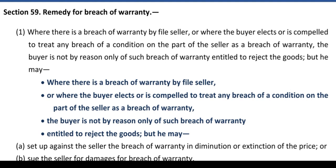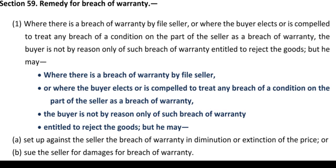Section 59 — remedy for breach of warranty. This right is available to the buyer. Note: specific performance under Section 58 is also an important exam topic — 5 mark questions can be asked in judiciary exams and LLB examinations. Section 59 provides: where there is a breach of warranty by the seller, or where the buyer elects or is compelled to treat any breach of condition as a breach of warranty, the buyer is not entitled to reject the goods, but may set up against the seller the breach of warranty in diminution or extinction of the price, or sue the seller for damages for breach of warranty.